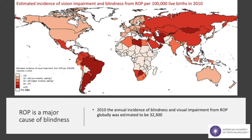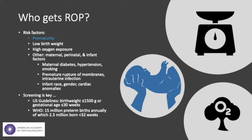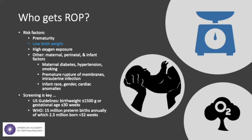In turn, this means that globally, we have an estimated 32,000 babies annually that suffer from blindness or severe visual impairment from an early age. So, who gets ROP? Well, as you might expect based on our discussion so far, prematurity and low birth weight are the most significant risk factors.